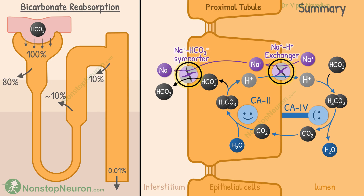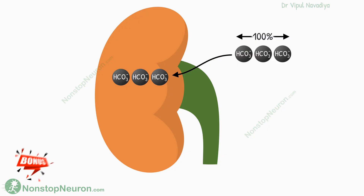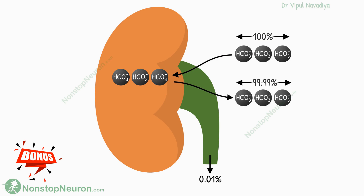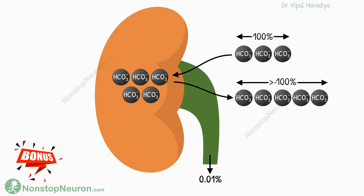That's all for the reabsorption of bicarbonate along the nephron. For a bonus point: the kidneys excrete 0.01% of filtered bicarbonate, so you might think that 99.99% of what entered must leave — but that's wrong. The amount leaving is actually more than what entered, because kidneys not only reabsorb almost all of the filtered bicarbonate, but also generate new bicarbonate. This generation is part of acid-base balance, and we will study it in more detail in that topic.